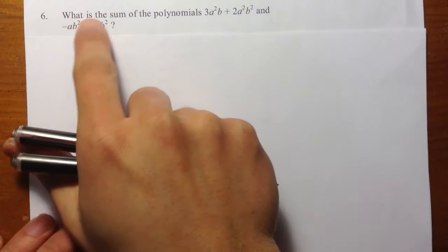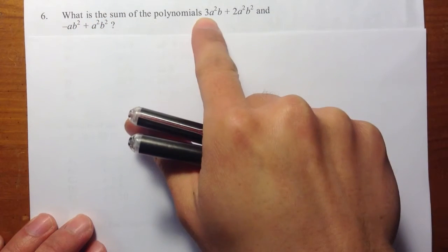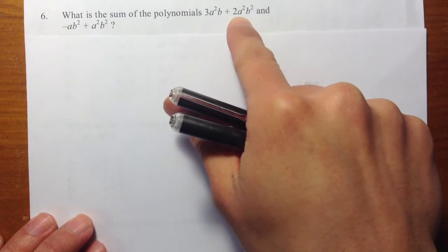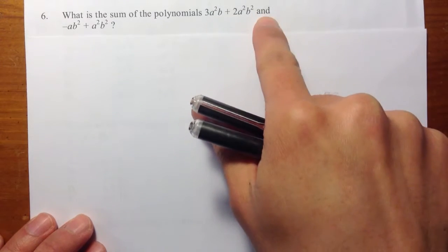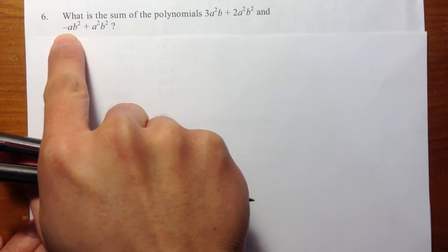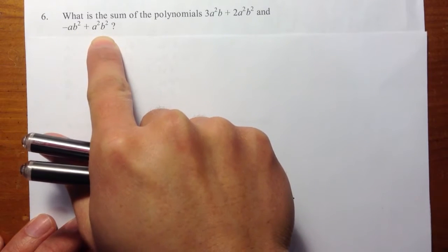Question 6. What is the sum of the polynomials 3a²b + 2a²b² and the other polynomial -ab² + a²b²?